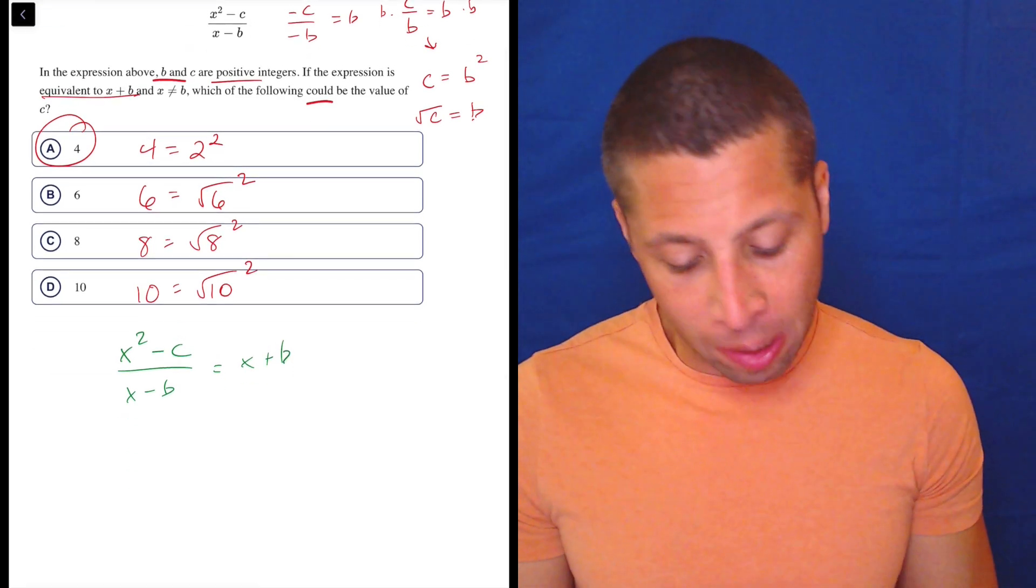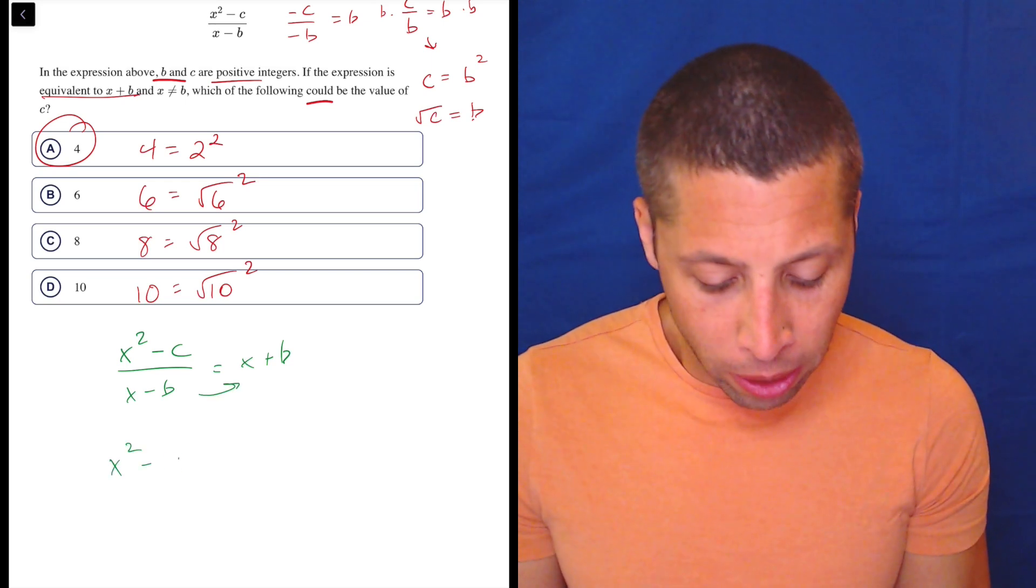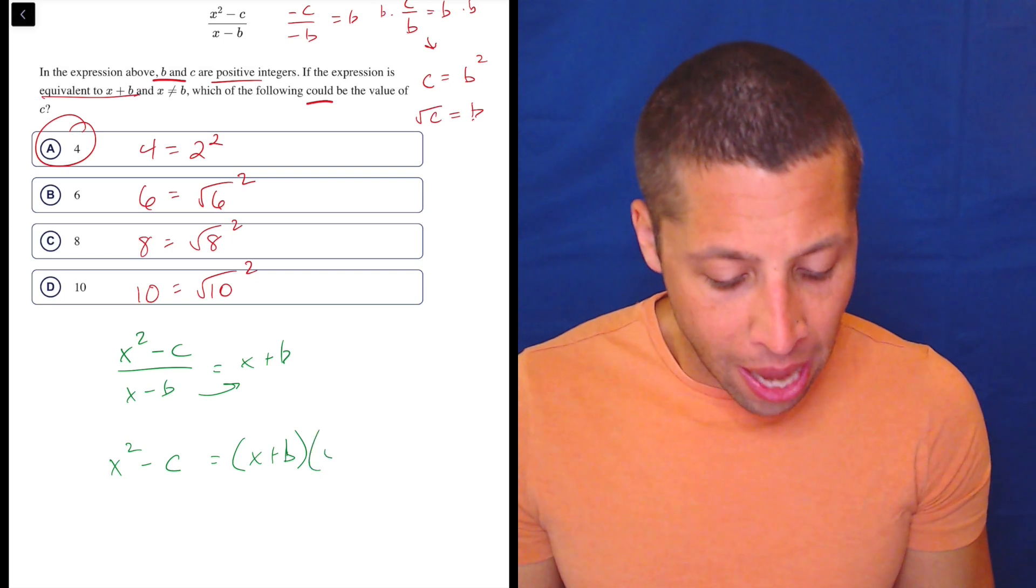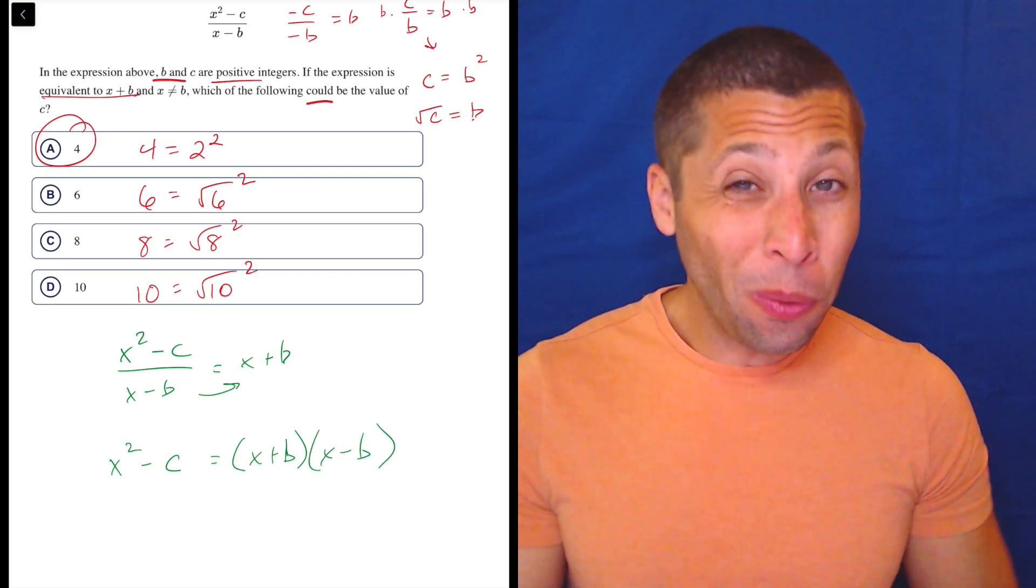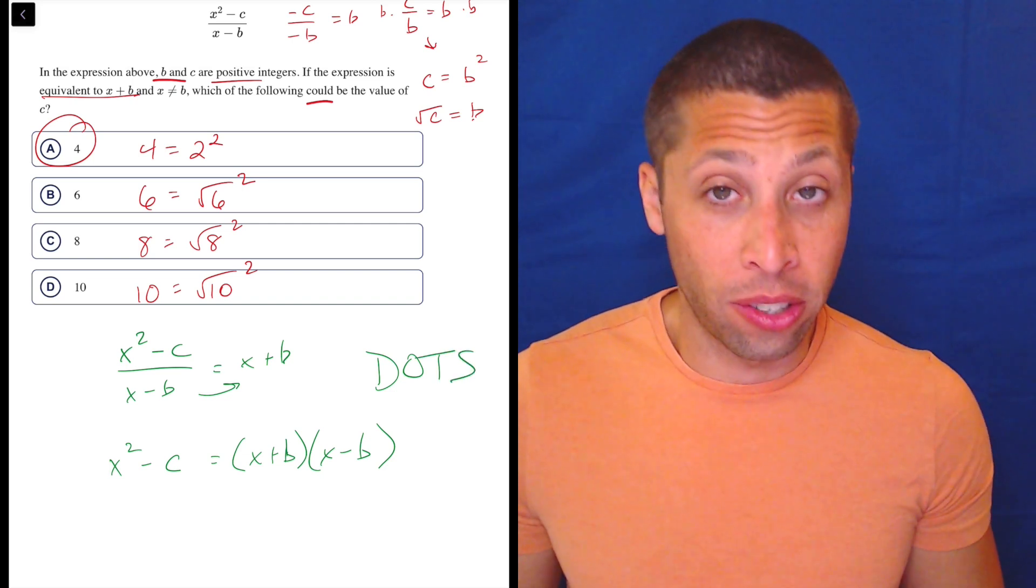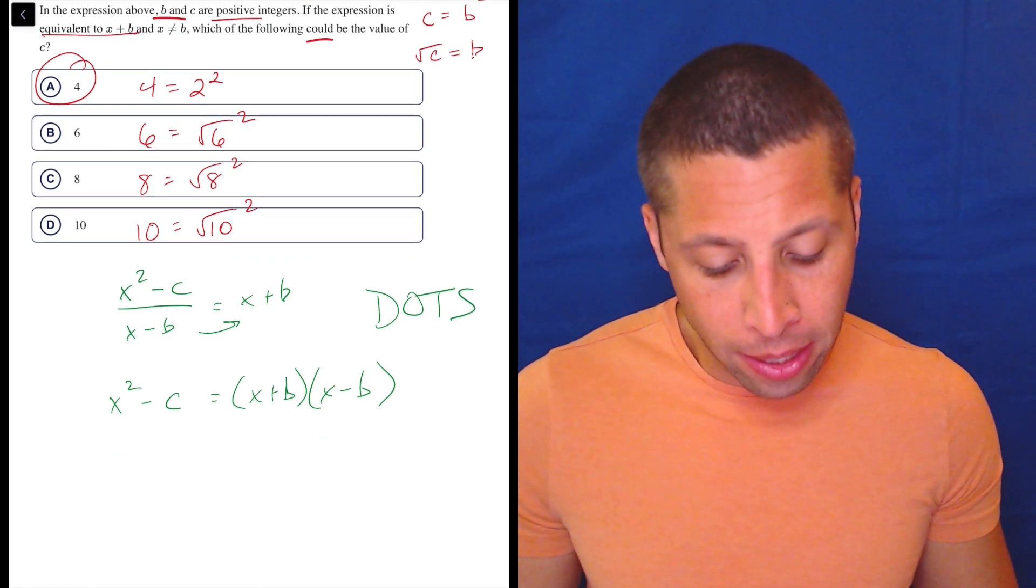Some of you might just see it when it's written like this, but my instinct is still to kind of multiply this across. So I'd have x squared minus C is equal to x plus B times x minus B. And hopefully at that point, everyone would recognize that this is difference of two squares, dots factoring.